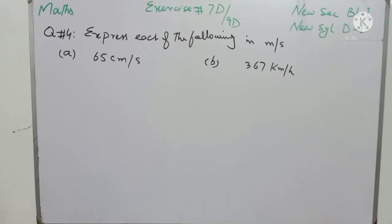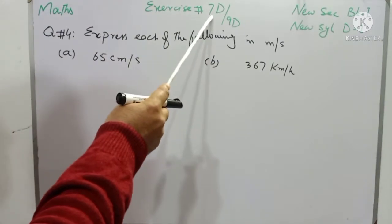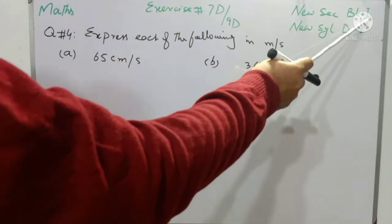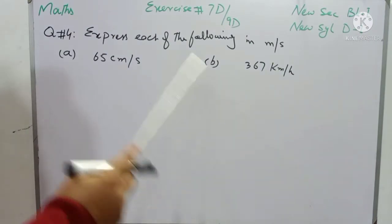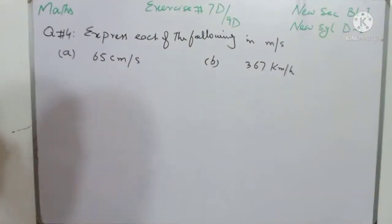Starting with the name of Allah Almighty, who is the master of the Day of Judgment, and a bundle of Durood on beloved Prophet Muhammad ﷺ. Dear students, mathematics exercise 7D for new curriculum mathematics book 1, class 6, and exercise 9D for mathematics D1 for A-level and O-level students.